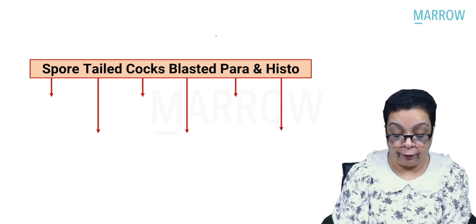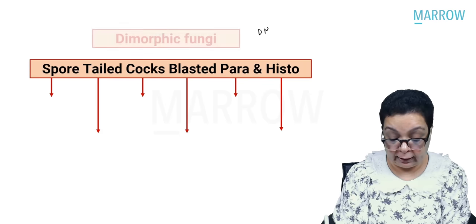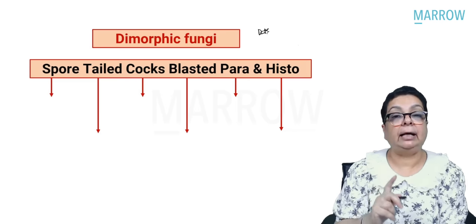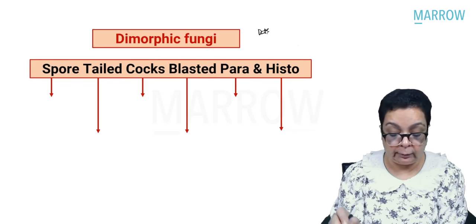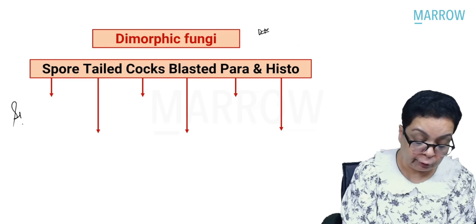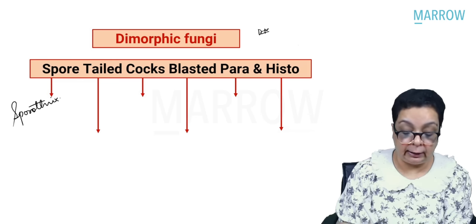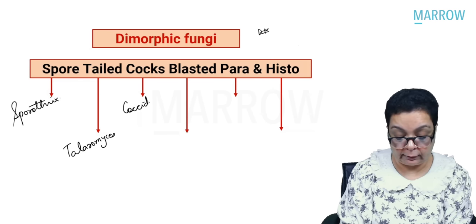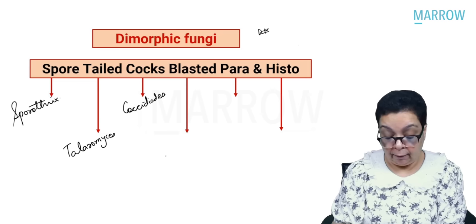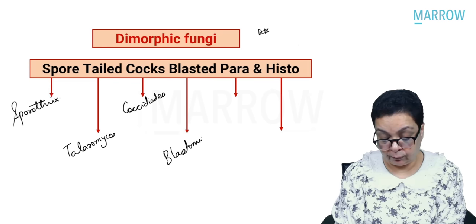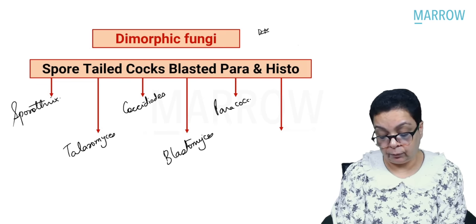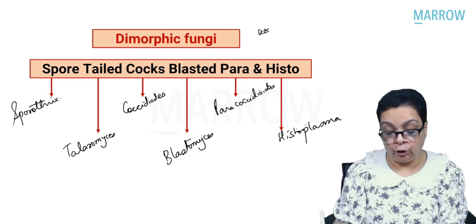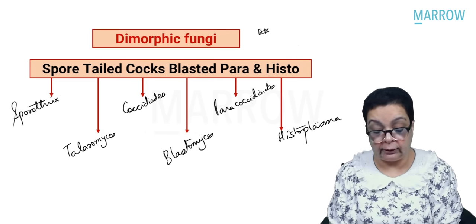The dimorphic fungi form yeast at 37°C and hyaline septate molds at room temperature. The mnemonic is 'Spore-tailed cocks, blasted para and histo': Sporothrix schenckii, Talaromyces marneffei (tail), Coccidioides immitis and posadasi, Blastomyces, Paracoccidioides, and Histoplasma.